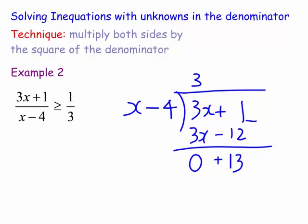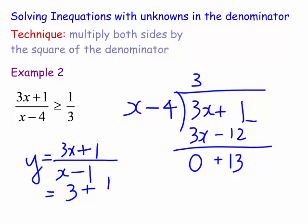Okay so basically that tells me that this curve y equals (3x+1)/(x-4) could be written as 3 plus 13/(x-4). Okay so how would I sketch that curve?